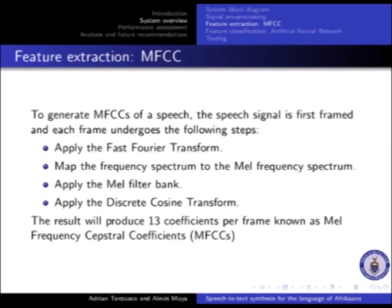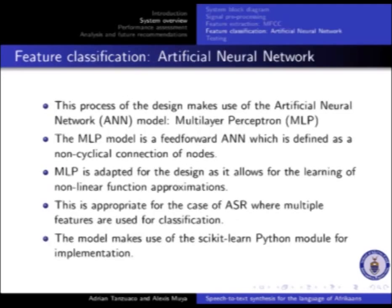The next stage is feature extraction using the MFCC algorithm. To generate MFCCs over speech, the speech signal is first framed, and each frame undergoes the following steps: first, apply the fast Fourier transform; secondly, map the frequency spectrum to the mel frequency spectrum; thereafter, apply the mel filter bank; and finally, apply the discrete cosine transform. The result produces 13 coefficients per frame, known as mel frequency cepstral coefficients — MFCCs.